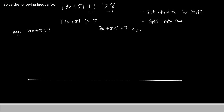Let's look at the positive one first and try to get x by itself. We'll subtract 5 from both sides. This gives us 3x greater than 7 minus 5, which is 2. Then we'll simply divide both sides by 3, so we'll have x greater than 2 thirds as our first answer.